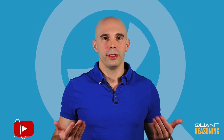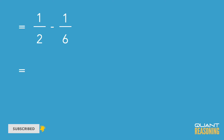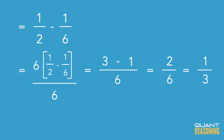Think of it as zooming in on your Google Maps on your smartphone. I'm zooming in by a factor of 6, and then at the end I just have to divide back out by 6, otherwise I'm changing the value of the expression. So I'm multiplying everything by 6 and then at the end I'll divide everything by 6. This is what it looks like: 6 times (one half minus one sixth), all divided by 6. We end up with 3 minus 1 over 6, so that's 2 sixths or one third — and that's the answer.